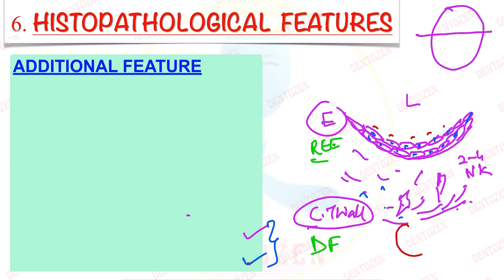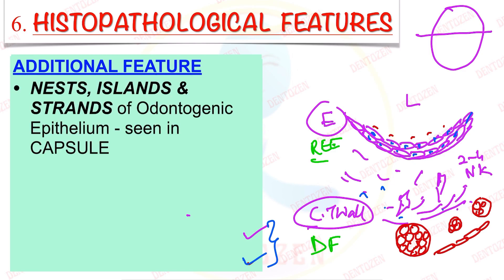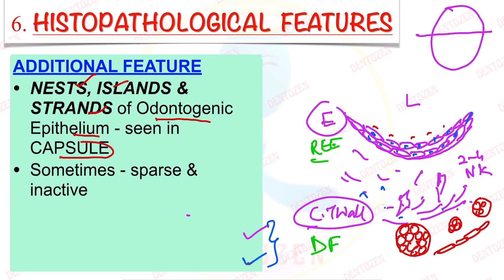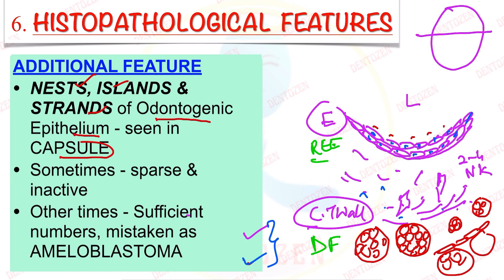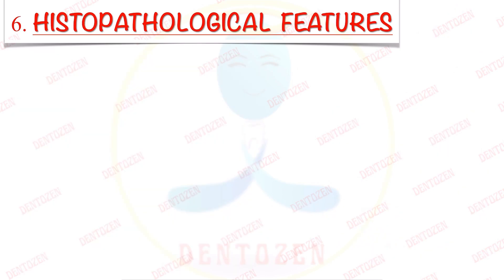An additional feature: the connective tissue wall may contain nests, islands, and strands of odontogenic epithelial cells in a resting/inactive state (from the dental follicle). Sometimes they become active and proliferate — when that happens, we may confuse it with a tumor: ameloblastoma, which is an odontogenic tumor.